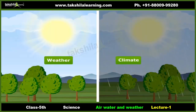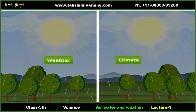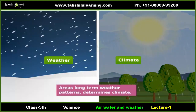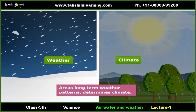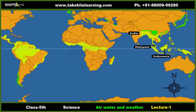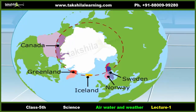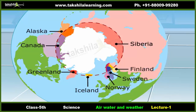Is weather and climate the same? No. An area's long-term weather patterns determine its climate. For example, areas near the equator have a warm climate and areas near the poles have a much colder climate. Now you can easily differentiate weather from climate.